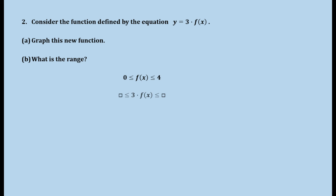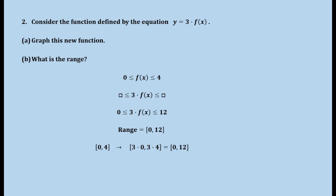We want to know what the new range is. We want to see not just f(x), but 3 times f(x) on the inside of this inequality. We get the bounds by multiplying the left and right-hand side by 3, giving us 0 and 12. So the new range for this function is the closed interval from 0 to 12. We're taking the original range from 0 to 4, multiplying the endpoints by 3, and obtaining the new stretched range. It's 3 times as long — from 0 to 12.